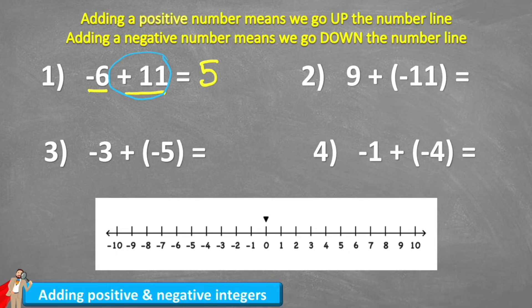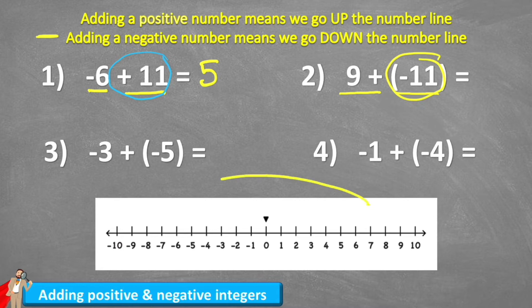We have nine plus a negative number this time. Remember rule two said if we add a negative number, we're going to end up coming down our number line. So first things first, I'm going to mark my nine on my number line — here it is — and I'm now going to come 11 jumps back down my number line. Here we go.